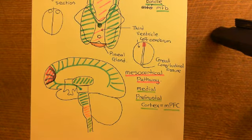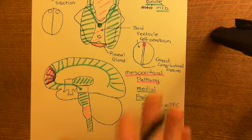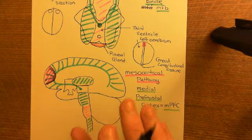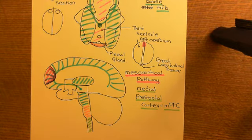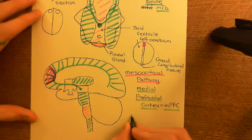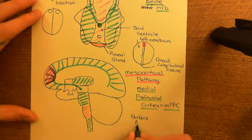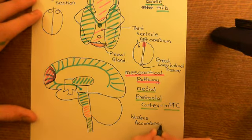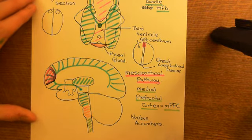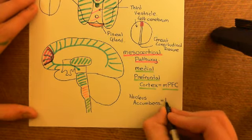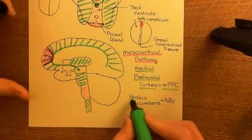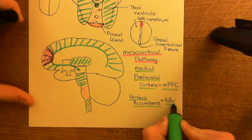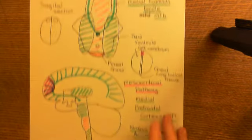Now we're going to turn our attention to the mesolimbic pathway — the pathway whereby dopaminergic neurons in the ventral tegmental area send their axons to the nucleus accumbens. To discuss the anatomy of the nucleus accumbens — usually abbreviated as NAc — we need to discuss the anatomy of the striatum, because the nucleus accumbens is part of the striatum.